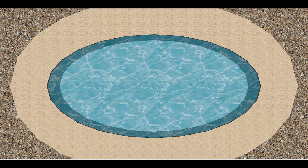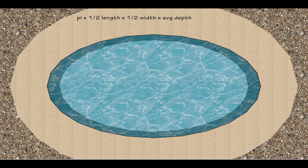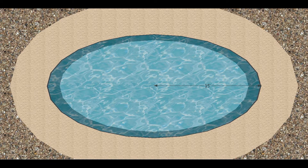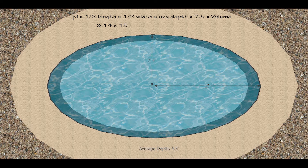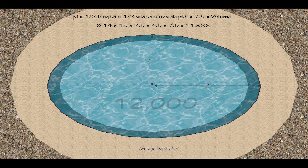Now let's take a look at an oval pool. Since an oval pool is kind of a squished circular pool, we will take 3.14 or pi and multiply that by half of the length and half of the width — which is like saying radius squared — and then multiply that by the average depth and 7.5. For example, if we have an oval pool that's 30 feet long and 15 feet across with an average depth of 4.5 feet, then we multiply pi by 15 times 7.5, then by the depth 4.5 and 7.5, and we get 11,922. We'll round this and call it a 12,000 gallon pool.